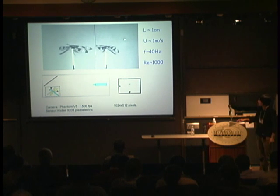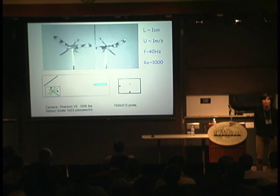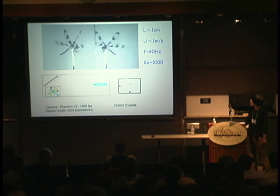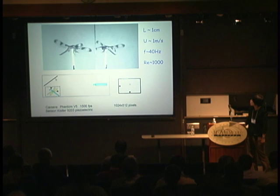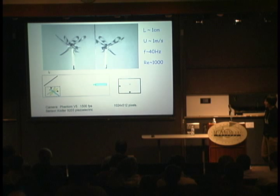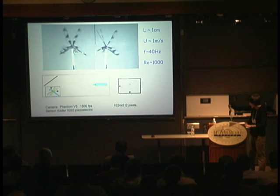In this particular case the Reynolds number is about 1,000. We're trying to get 3D kinematics using a single camera by putting a mirror — so the camera looks at two views: the dragonfly itself and its mirror image. By doing a little geometry, we can deduce from these two images what the 3D kinematics is.